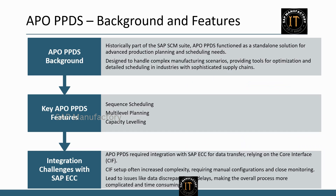Let's start with a bit of background on APO PPDS. Historically, APO PPDS was a standalone solution within the SAP SCM suite, designed to handle complex production scenarios with advanced tools for managing manufacturing and scheduling processes. One of its core features is sequence scheduling, which allows users to manage and optimize the order in which production tasks are executed, ensuring the sequence minimizes downtime and maximizes efficiency.